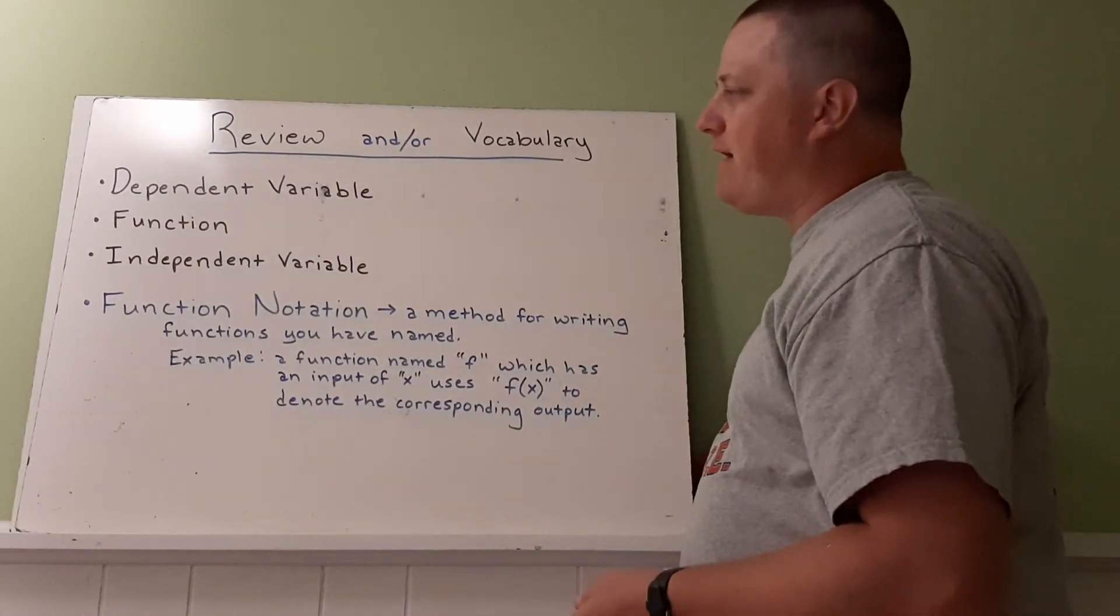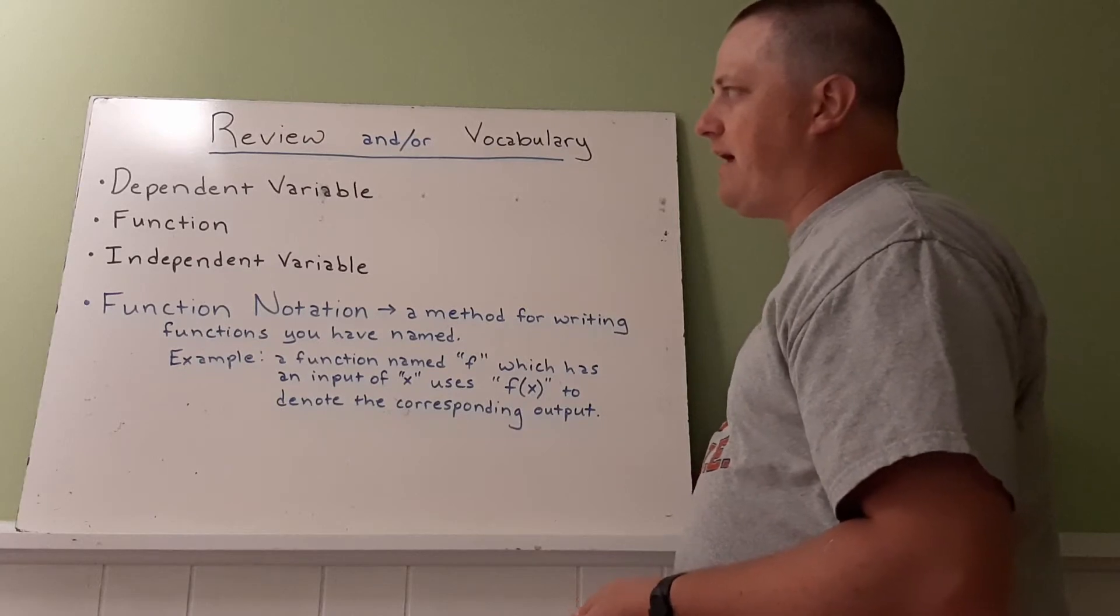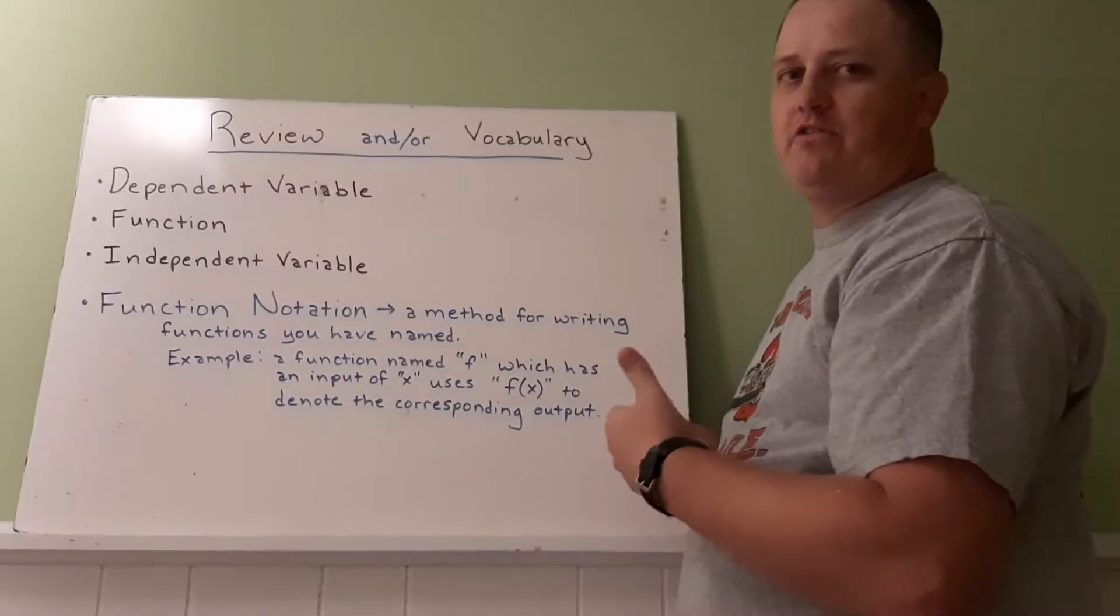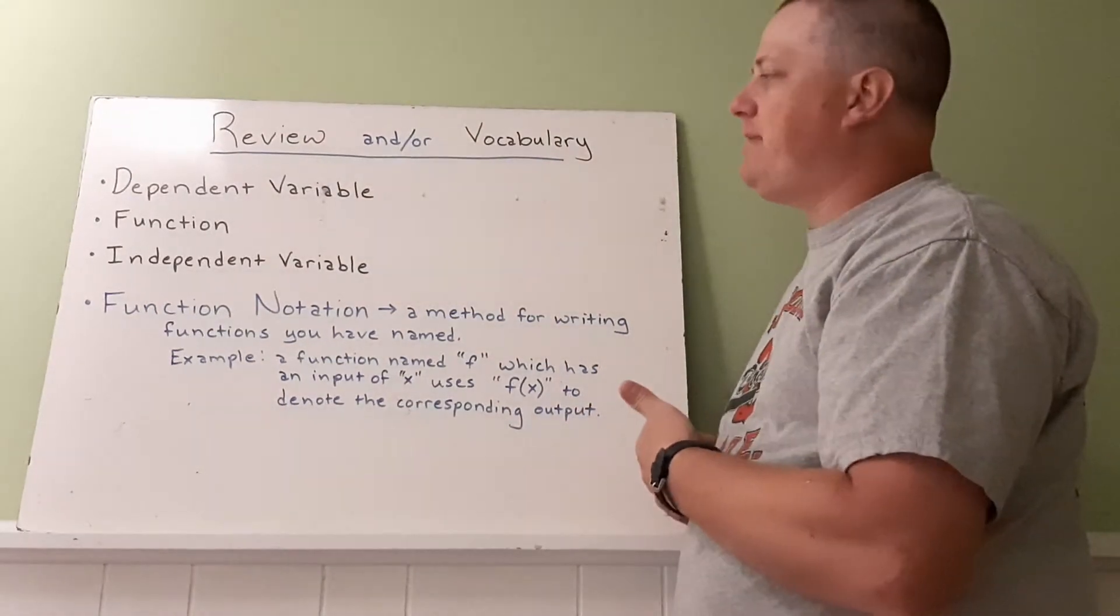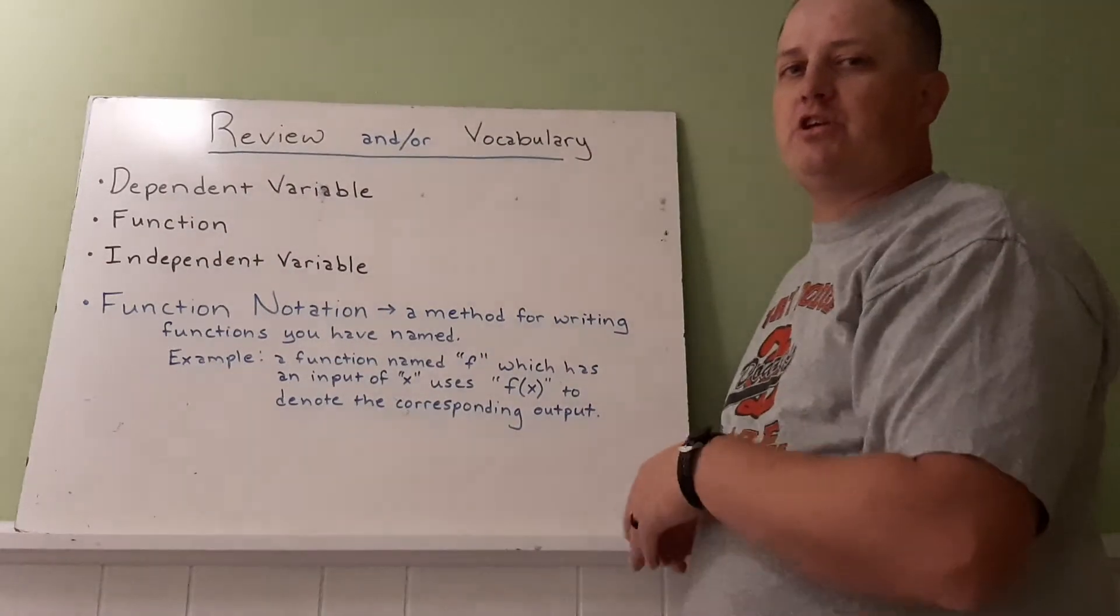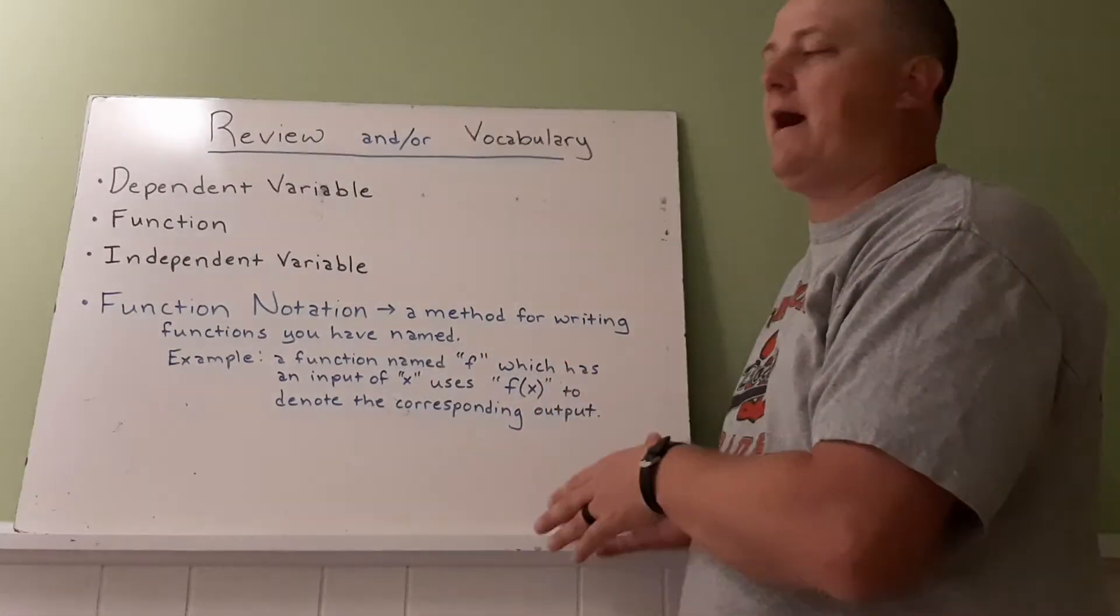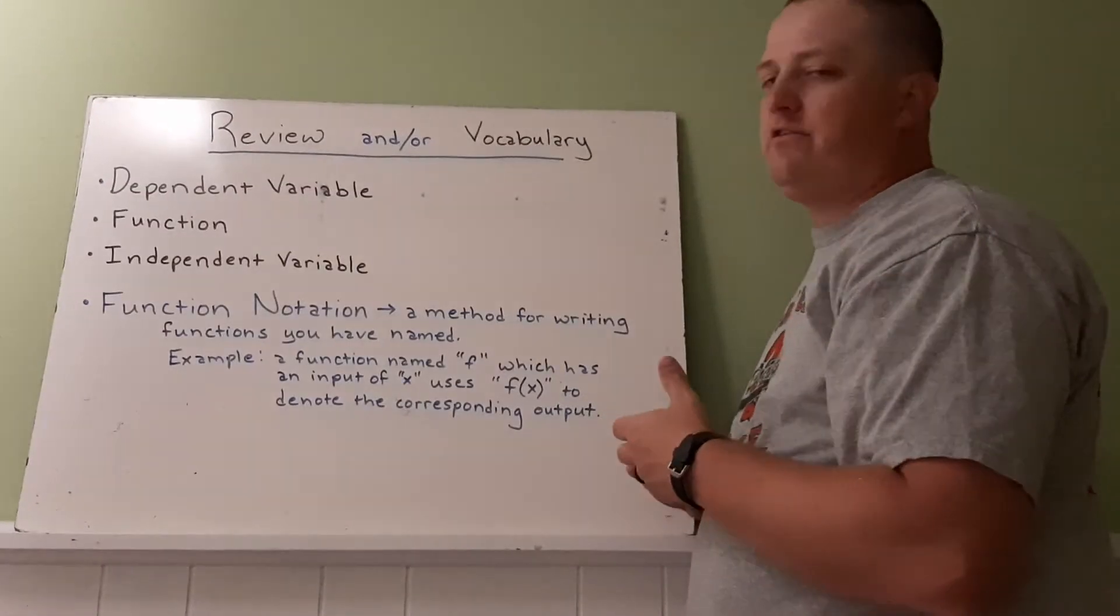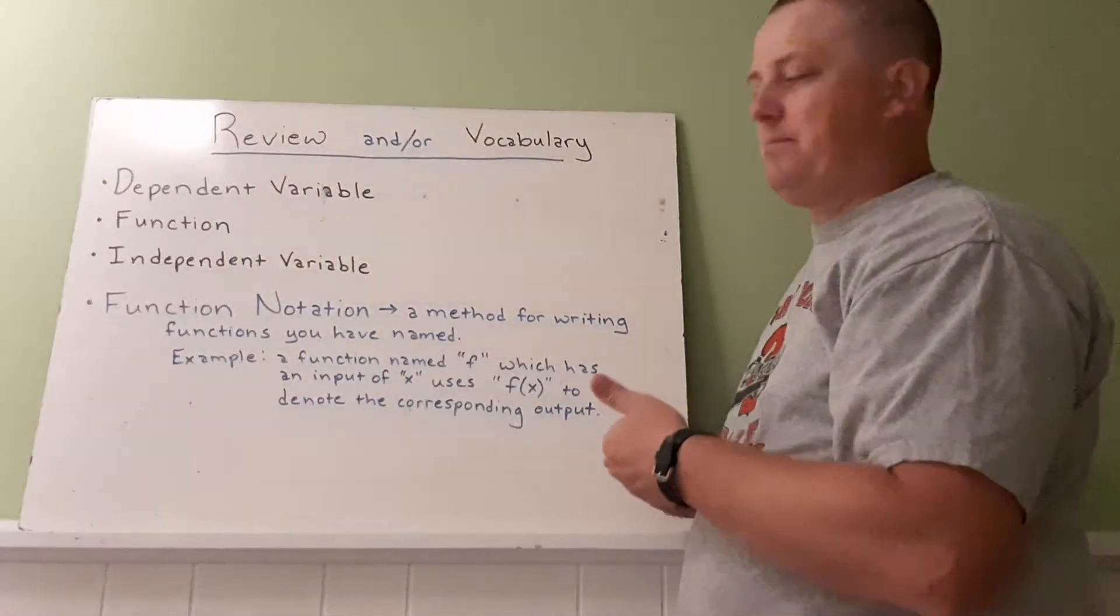So our vocabulary here stays basically the same. We have dependent variable, which is our outputs from the situation. A function, which is a relationship that takes one input to exactly one output. Independent variable, which is the input of the problem.